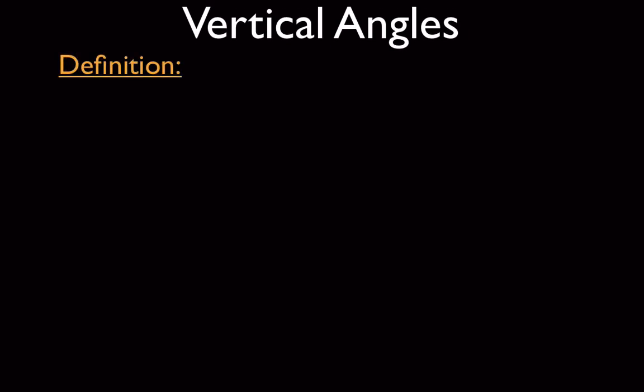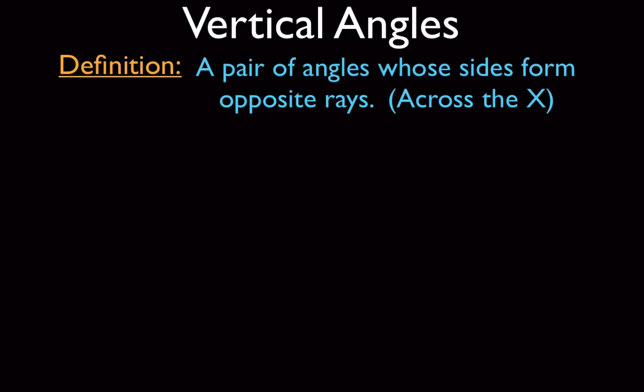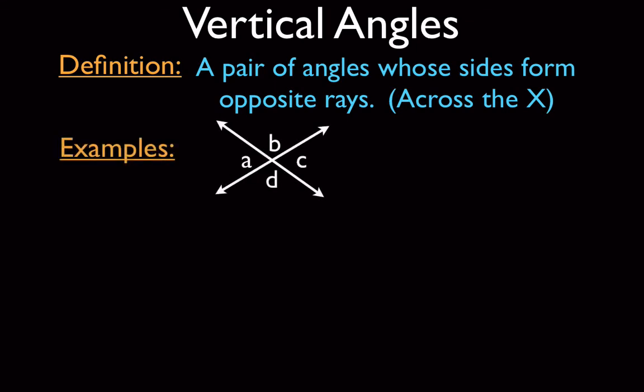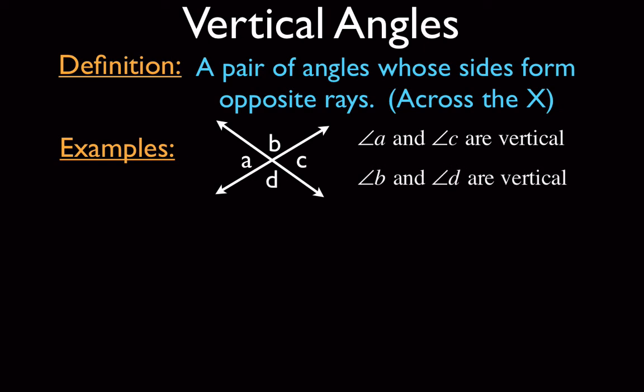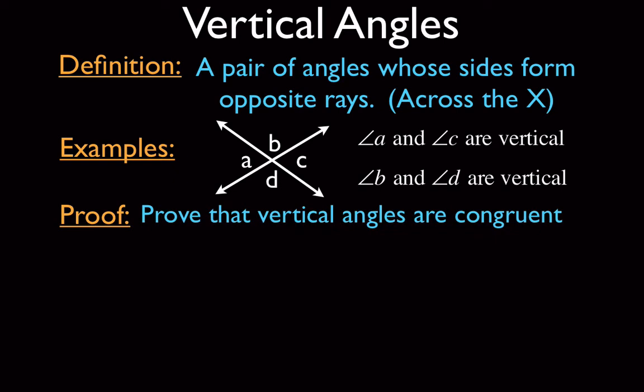The third type of angle pair is vertical angles. Vertical angles are very different — they don't add up to something; they're equal. The official definition is a pair of angles whose sides form opposite rays. I think about it across an X: when you have an X shape, you always have vertical angles. The key property of vertical angles is they're always equal. So a and c are vertical, and b and d are also vertical from each other.